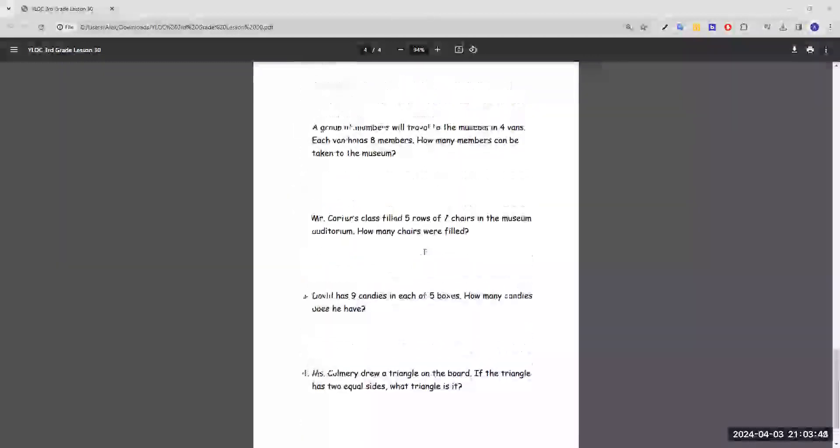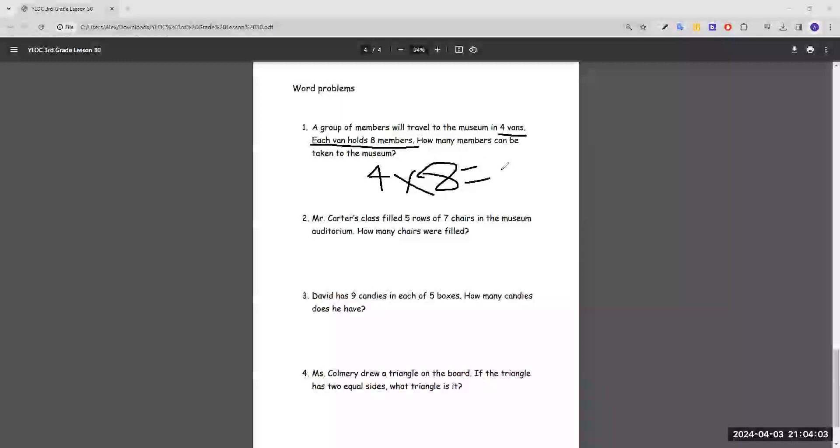And now moving on to word problems. Number one, a group of members will travel to the museum in four vans. Each van holds eight members. How many members can be taken to the museum? So each van holds eight members and there's four vans. Four vans times eight members in each van. That would just be 32 members that can be taken to the museum.